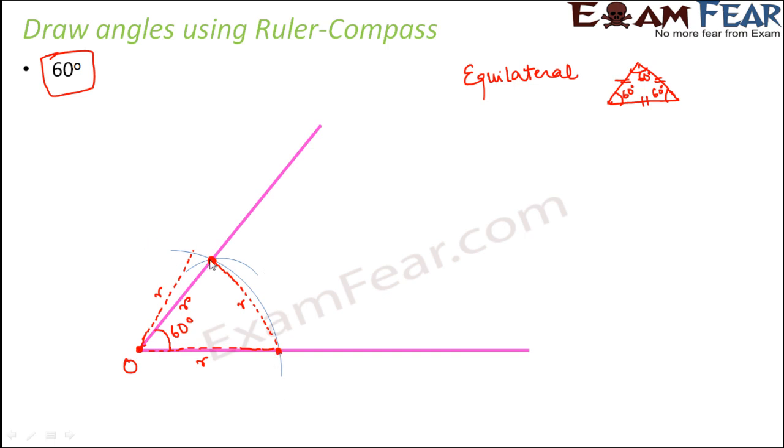place your compass here, draw an arc, then place your compass here, draw another arc, and then you join and you get a 60 degree. But why are we doing that? That's because we want to draw an equilateral triangle here. If we are able to draw an equilateral triangle, that would by default mean that this angle is 60 degrees.